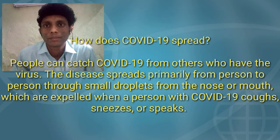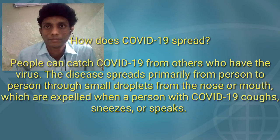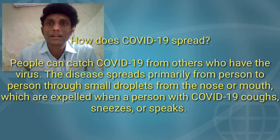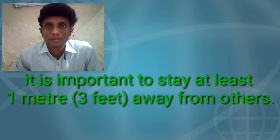So how does COVID-19 spread? People can catch COVID-19 from others who have the virus. The disease spreads primarily from person to person through small droplets from the nose or mouth, which are expelled when a person with COVID-19 coughs. That is why it is very important to stay at least one meter away from others.